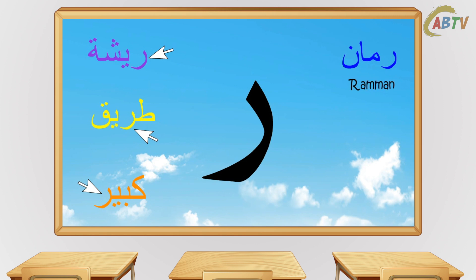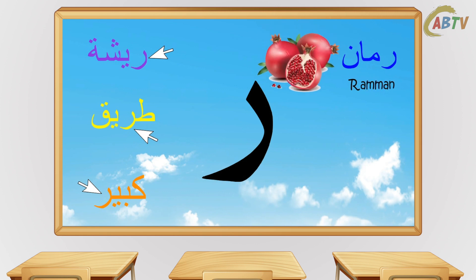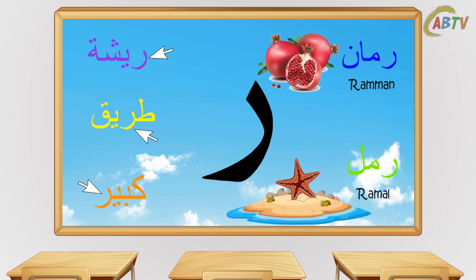Here are some examples. Ra in the word 'rumman' which means pomegranate, or Ra in the word 'ramal' which means sand. Ra is also one of the letters which no letter can join after it, as shown in the examples.